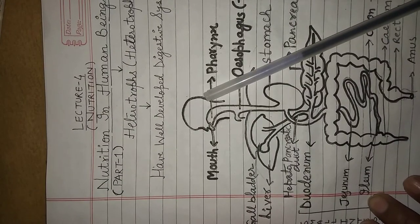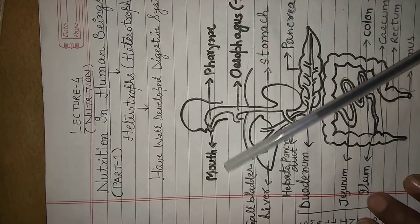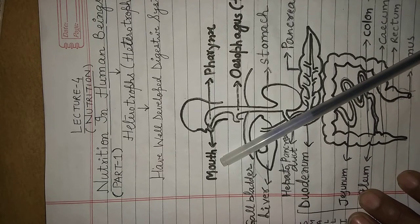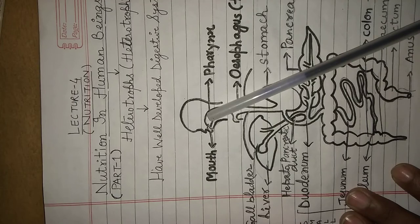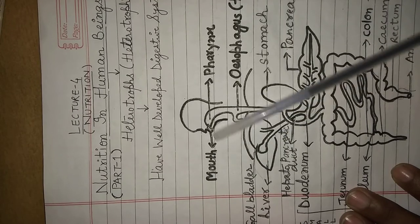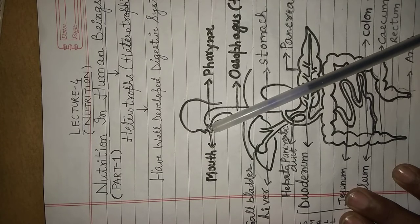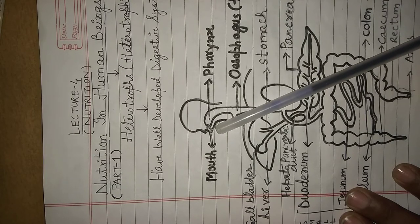Now let us understand this with a diagram. If we see the structure of the human alimentary canal and human digestive system, the first part of the alimentary canal is the mouth. Mouth ek slit-like opening hoti hai jo do movable lips se covered hoti hai. Mouth hamari ek wide chamber mein jakar open hoti hai jise hum mouth cavity kehte hain. Mouth cavity mein variety of things hoti hai: teeth of different types, a muscular tongue, and three pairs of salivary glands.